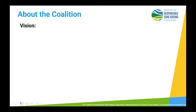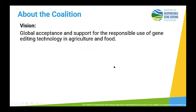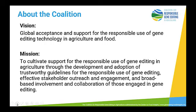Let's start by creating the foundation about the coalition — how did we get to where we are today, what are we about, what's the vision and mission? The vision is pretty straightforward: global acceptance and support for the responsible use of gene editing technology in agriculture and food. Those who participate in the coalition see tremendous potential for this technology to make a significant positive impact on challenges from climate change to nutrition, food affordability, availability, and reducing animal suffering. The mission is to cultivate support through the development and adoption of trustworthy guidelines, effective stakeholder outreach and engagement, and broad-based collaboration.